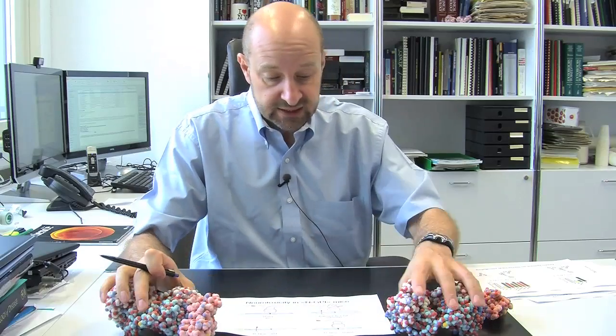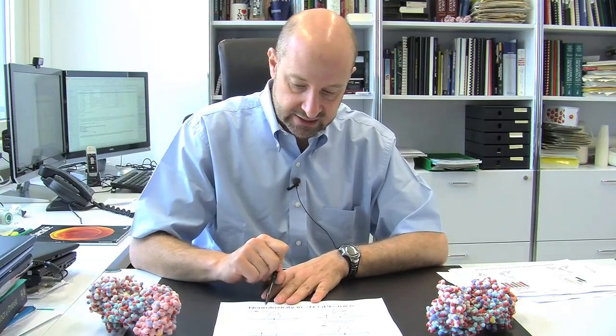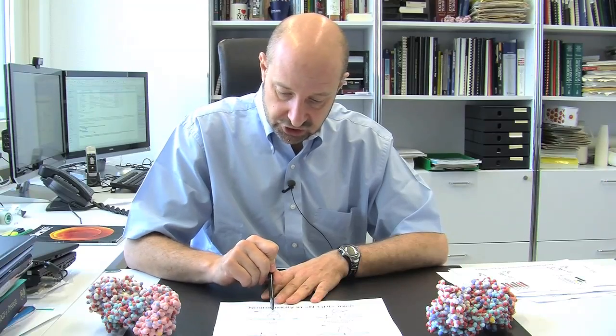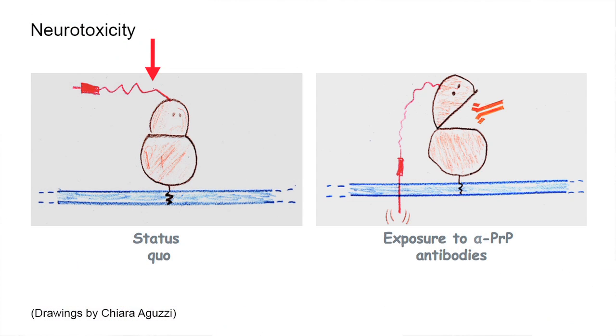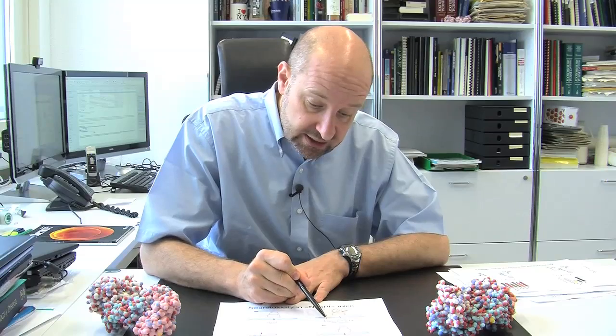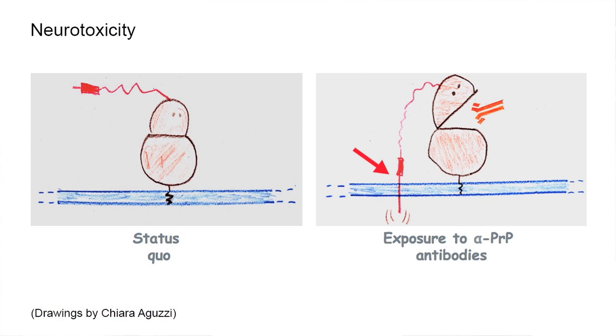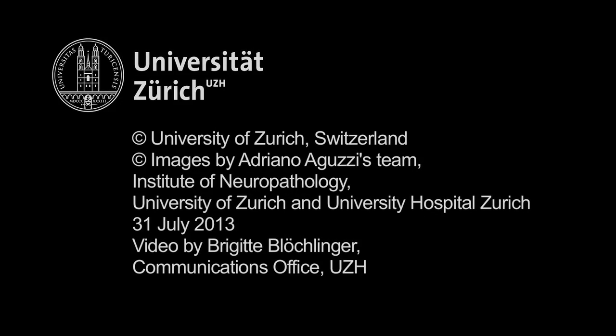The bottom line — and this is really the model of how we think the toxicity works — is that in the normal situation the N-terminus is somewhere unstructured, and in the presence of the antibody a conformational transition occurs which causes the N-terminus to get closer to the membrane. We believe — though we don't know exactly what happens there — that the N-terminus may even acquire a transmembrane conformation, and this will create a chain of events which will eventually result in neurotoxicity. Thank you very much.